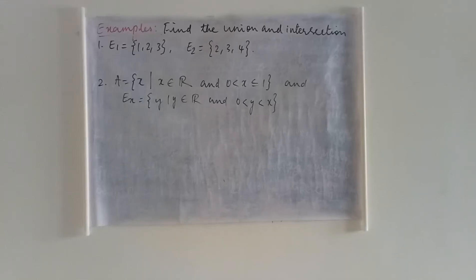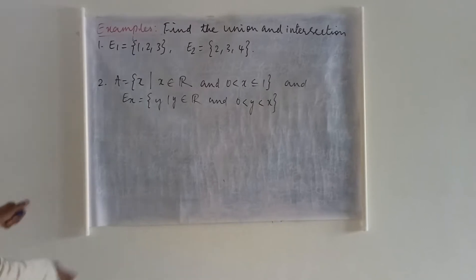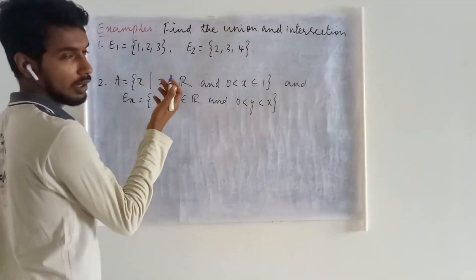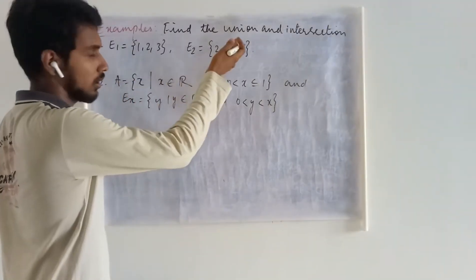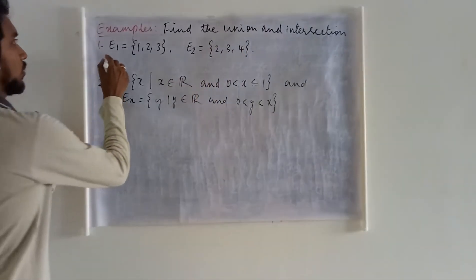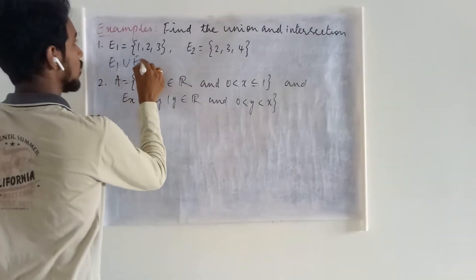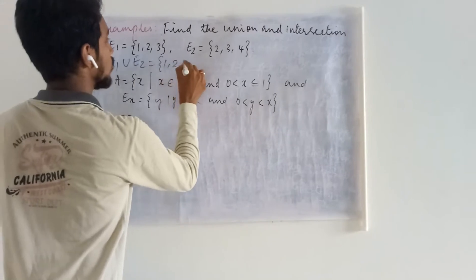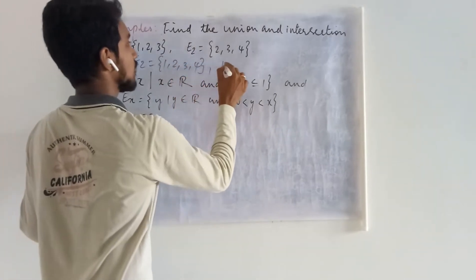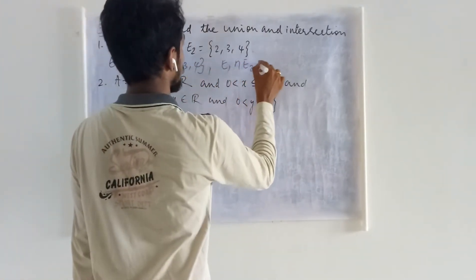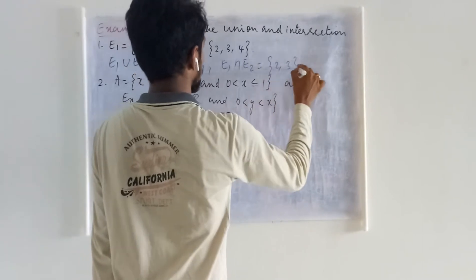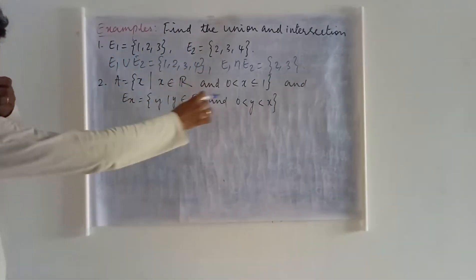Continuing from the previous definition and examples, we are going to find the union and intersection of these examples. In the first example, it is a finite case — the usual problem. The union is going to be {1, 2, 3, 4} and the intersection is going to be {2, 3}.